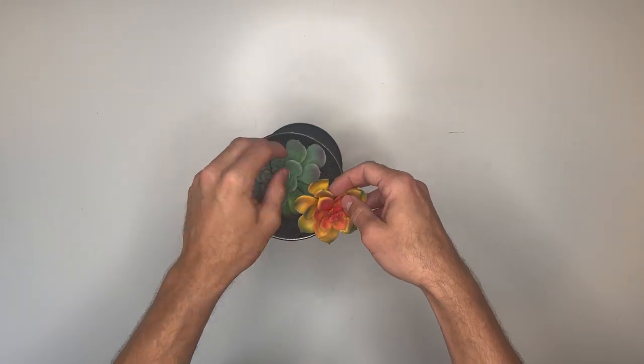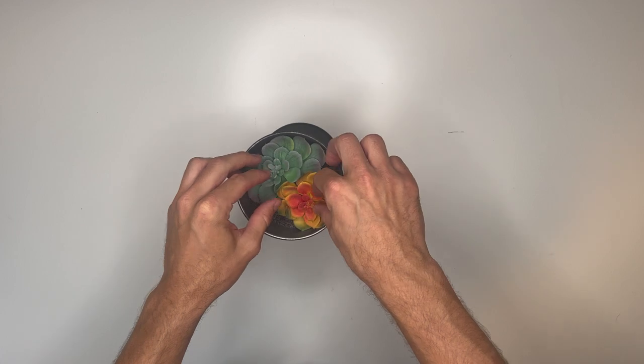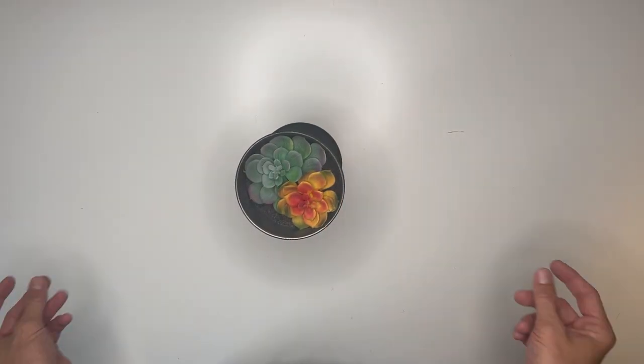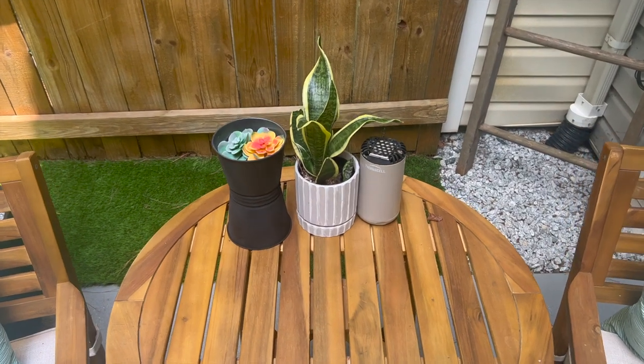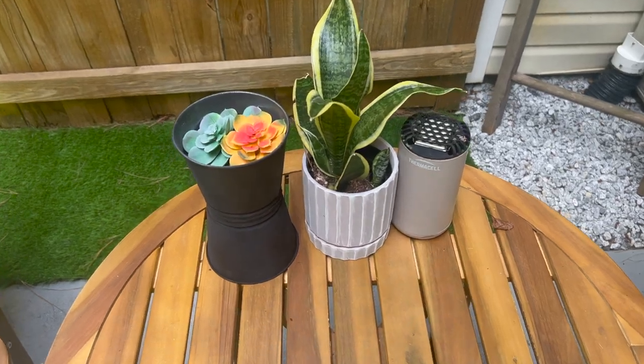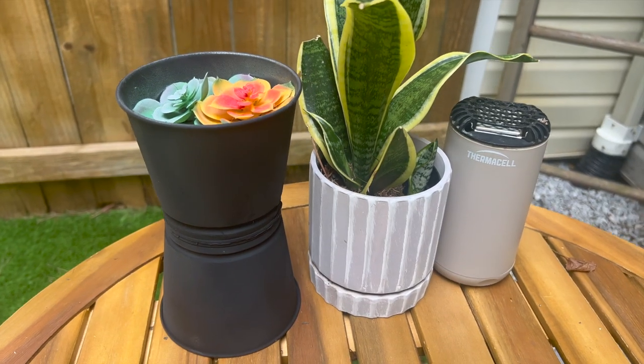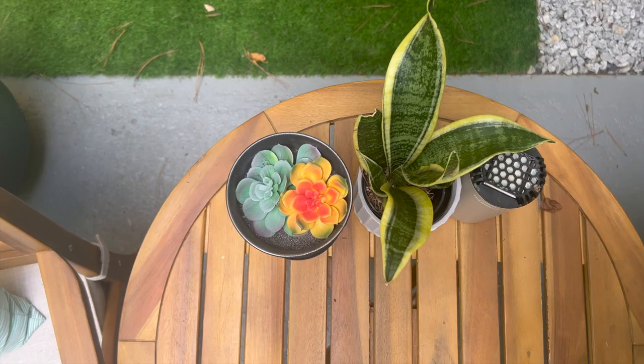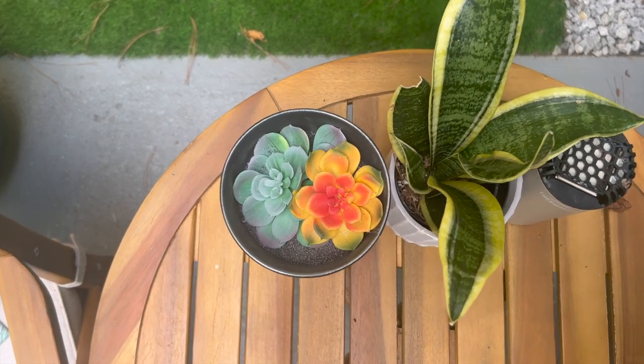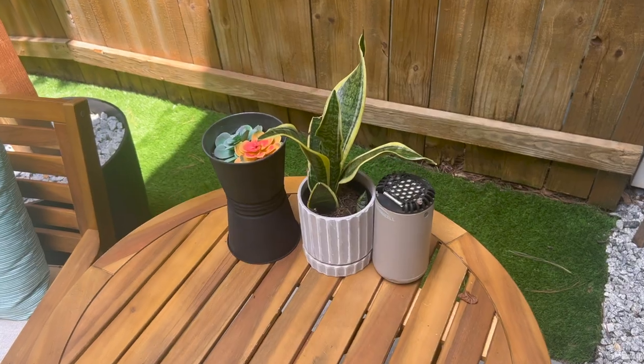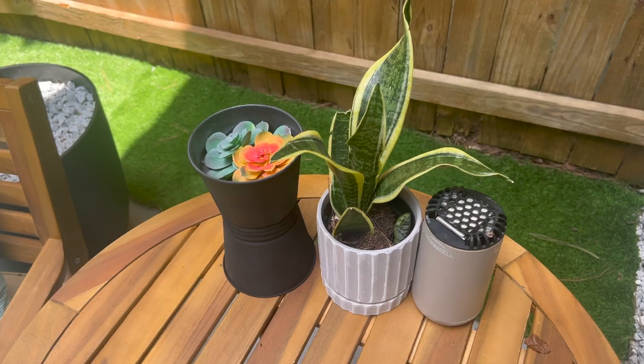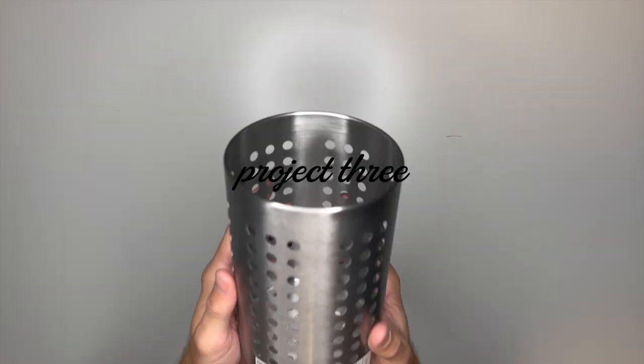Project number three is another super easy hack. We're going to take the Ordning kitchen utensil holder that has this metal, almost industrial kind of look to it, and give it a very quick makeover.